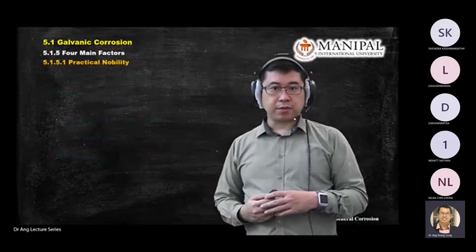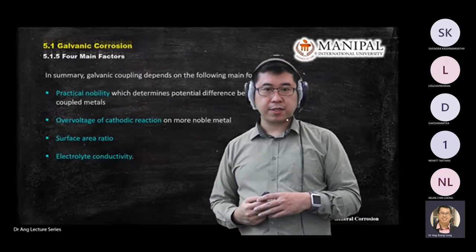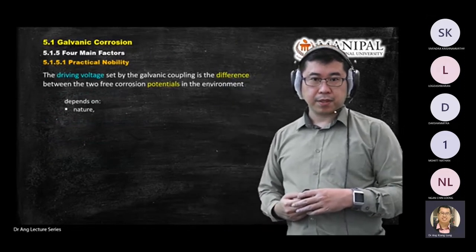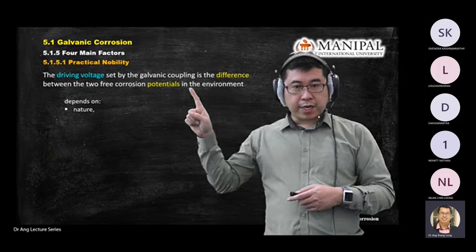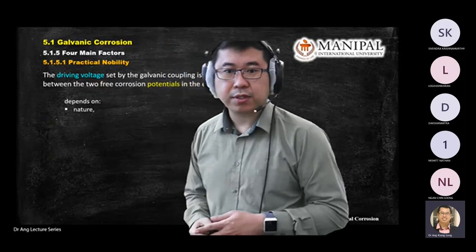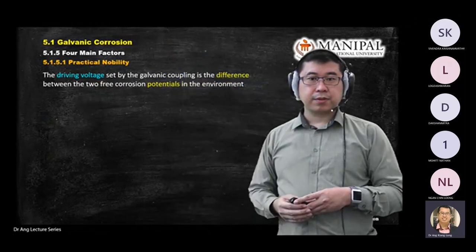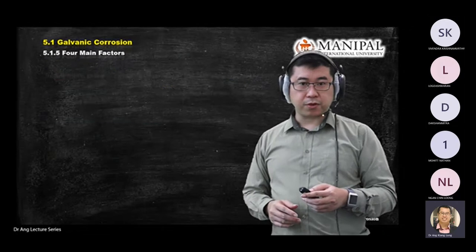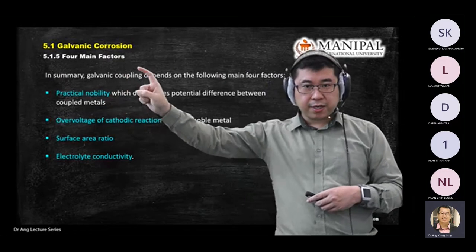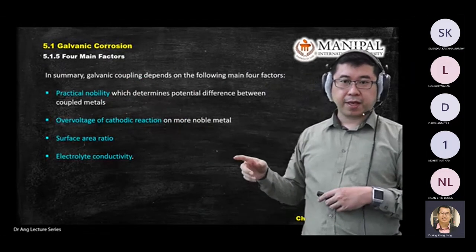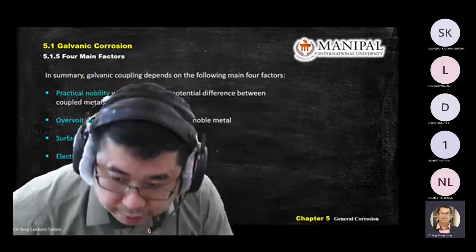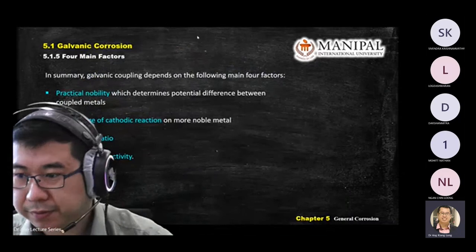Just take note of these four factors. Next we will look at the driving voltage. Before that, let's take a short break. To summarize before the break: we covered the four factors that affect galvanic coupling — nobility, overvoltage of the cathodic reaction, surface area ratio, and electrolyte conductivity.